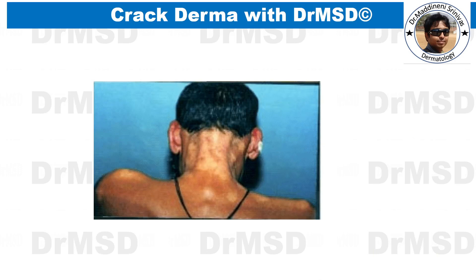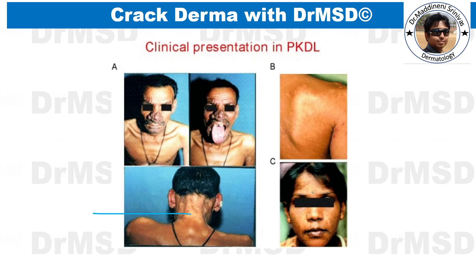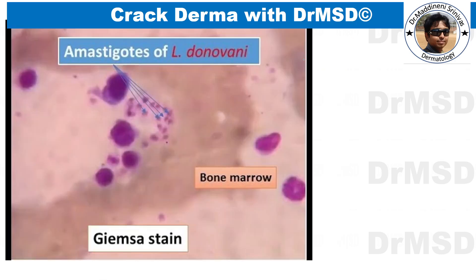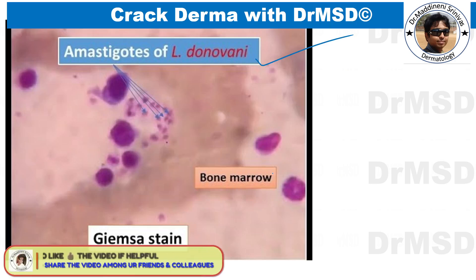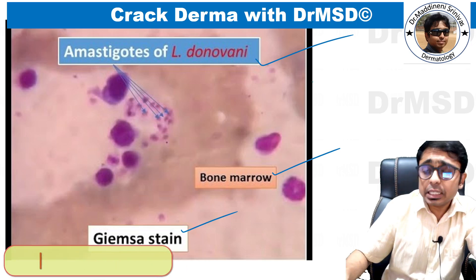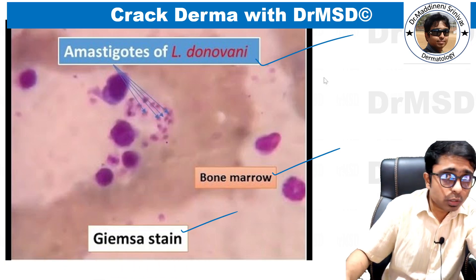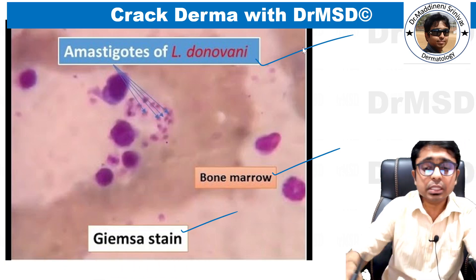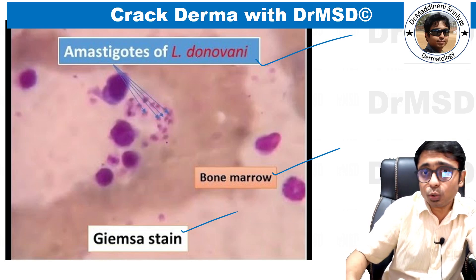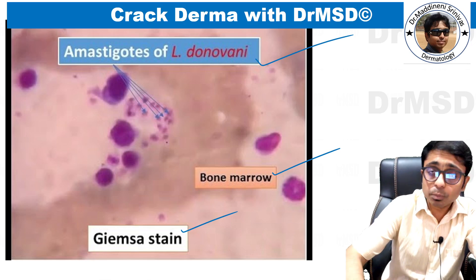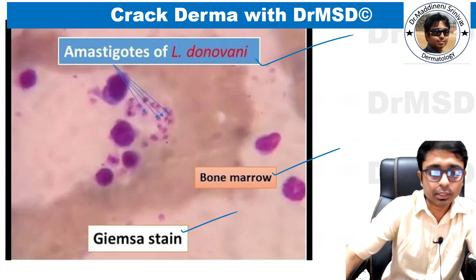This is one more image similar to what was asked in the question. In bone marrow aspirates with Giemsa stain, we can see amastigote forms of Leishmania donovani — this is very important. An MCQ was asked on whether these were amastigotes or promastigotes: they are amastigote forms of Leishmania donovani, observable in bone marrow with Giemsa stain.